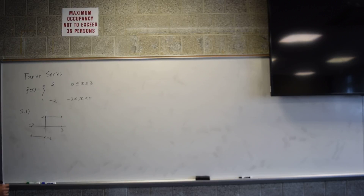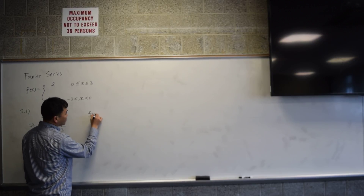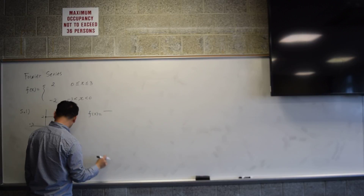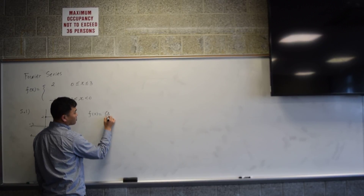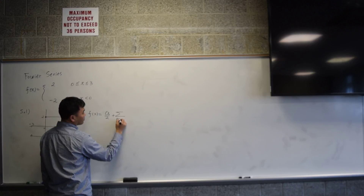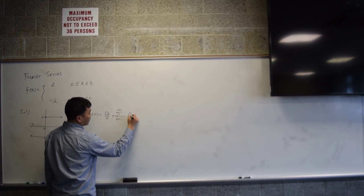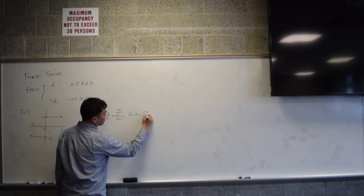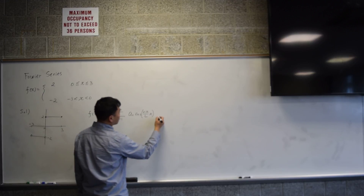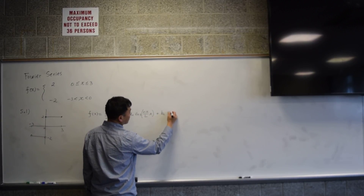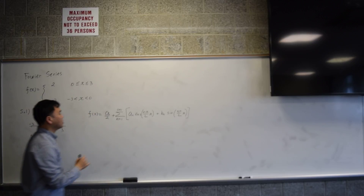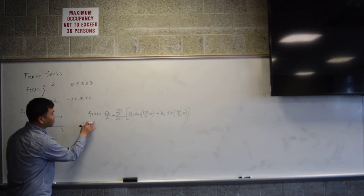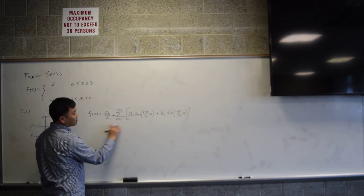We're trying to find the Fourier series of this function. Fourier series means we're trying to approximate this function as sums of sines and cosines with a possible constant. So you have a₀ over 2 plus the sum from n=1 to infinity of aₙ cos(nπ/L · x) plus bₙ sin(nπ/L · x). That's what Fourier series means — representing this function as an infinite sum of sines and cosines.